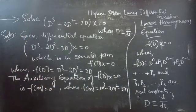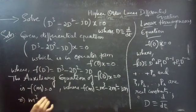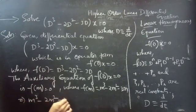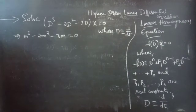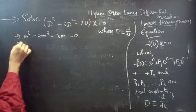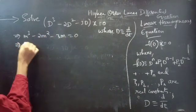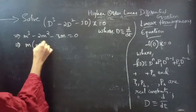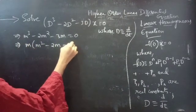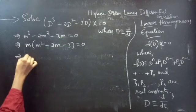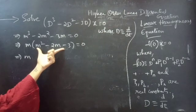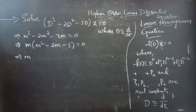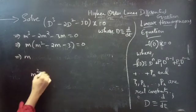Using the auxiliary equation m³ - 2m² - 3m = 0, we take m common from all three terms to get m(m² - 2m - 3) = 0. Now we need to find the factors of the quadratic polynomial m² - 2m - 3.